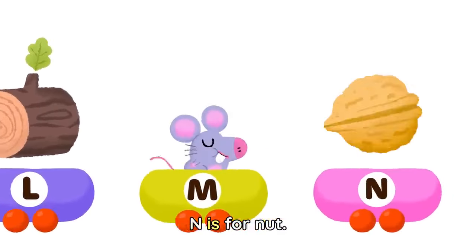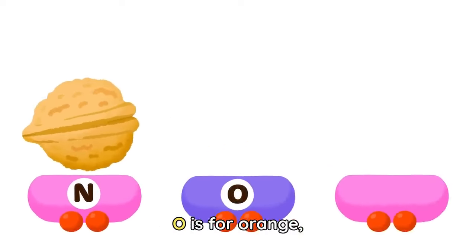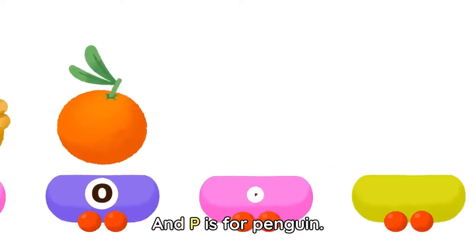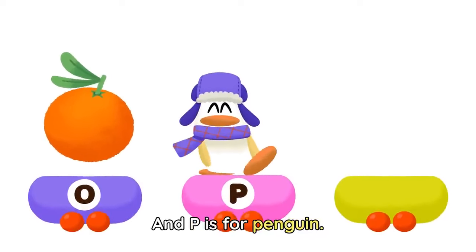N is for Nuts, O is for Orange, and P is for Penguin.